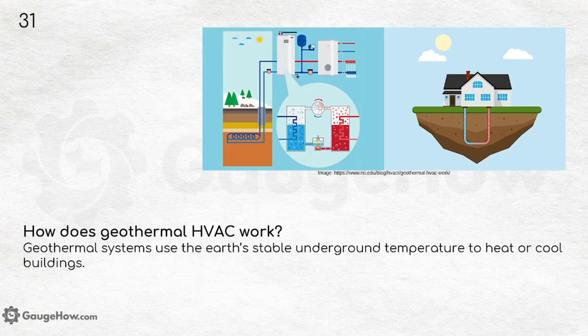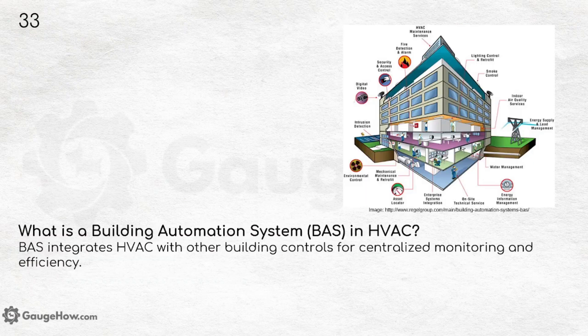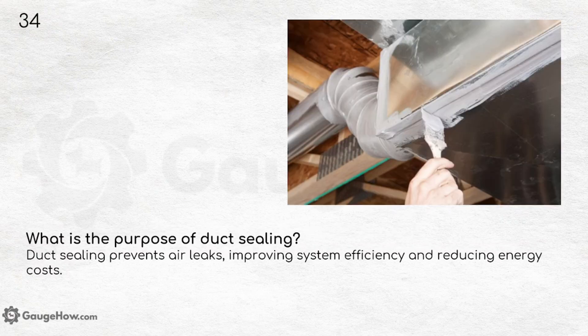How does geothermal HVAC work? Geothermal systems use the earth's stable underground temperature to heat or cool buildings. What is a chiller and how does it work? A chiller removes heat from a liquid using vapor compression or absorption refrigeration to cool large buildings. What is a Building Automation System (BAS) in HVAC? BAS integrates HVAC with other building controls for centralized monitoring and efficiency. What is the purpose of duct sealing? Duct sealing prevents air leaks, improving system efficiency and reducing energy costs.